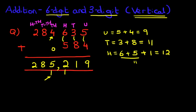We can even put a comma here as well. So therefore, the answer is two hundred and eighty-five thousand two hundred and nineteen.